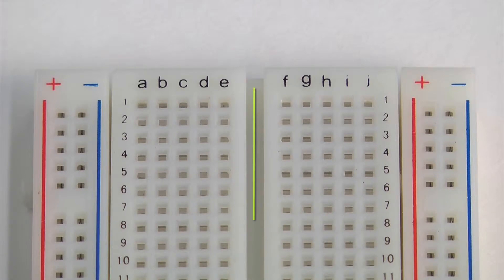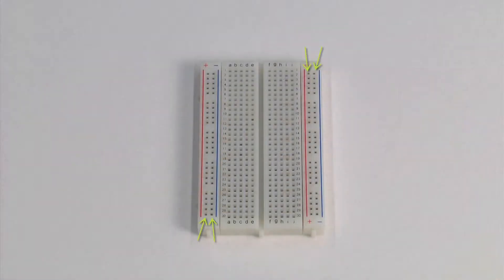Opposite halves of the breadboard are not connected. These columns on either side of the breadboard are called power rails. Power rails are connected vertically.